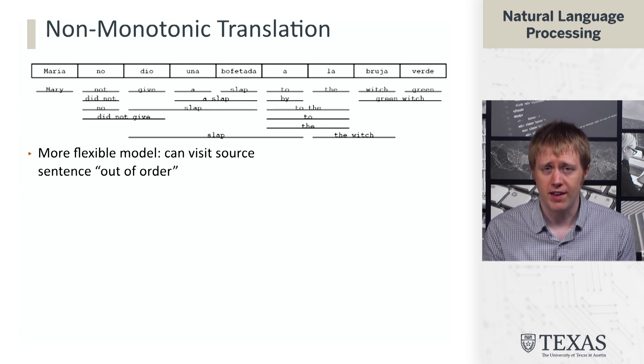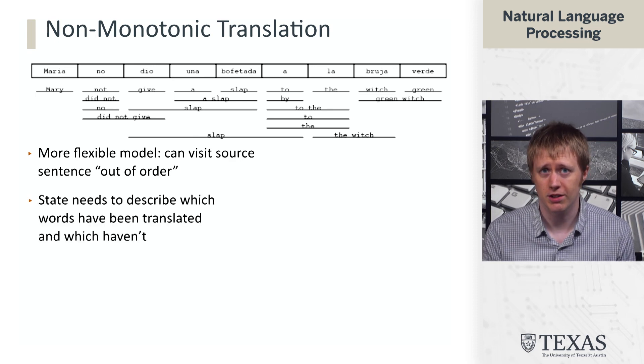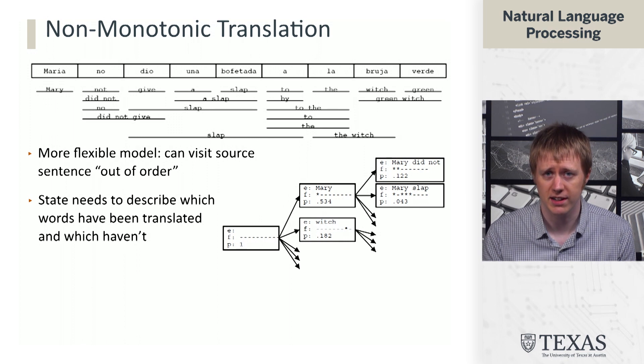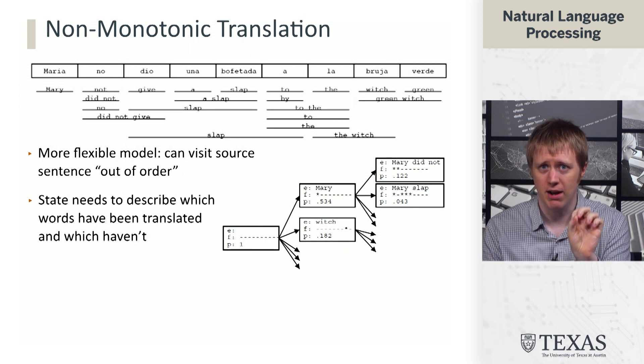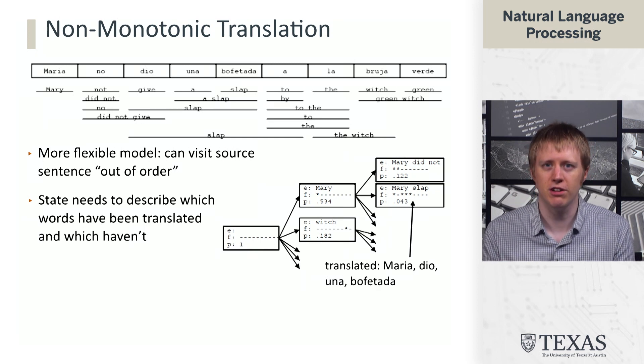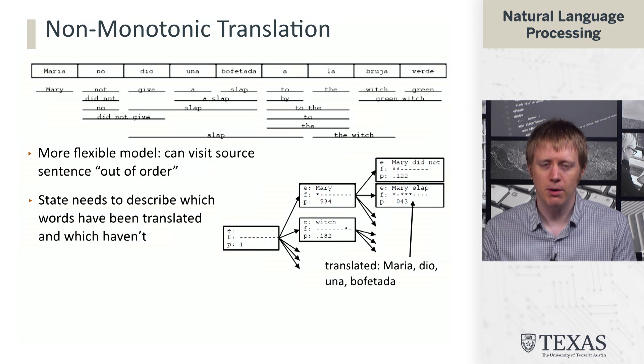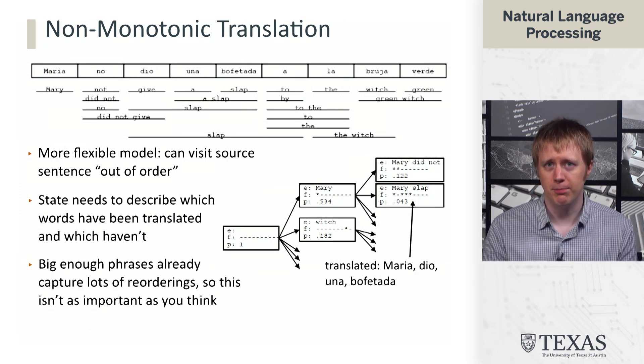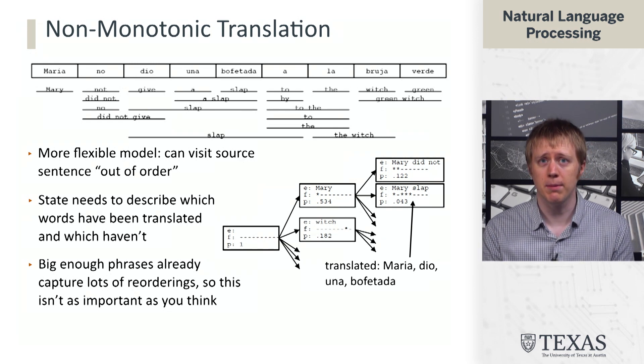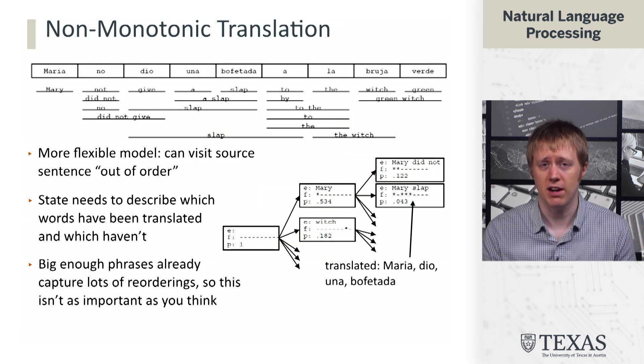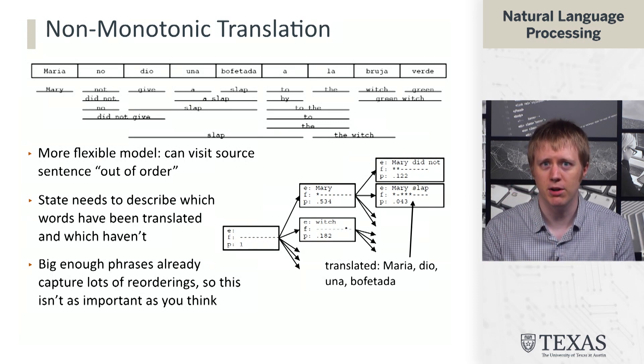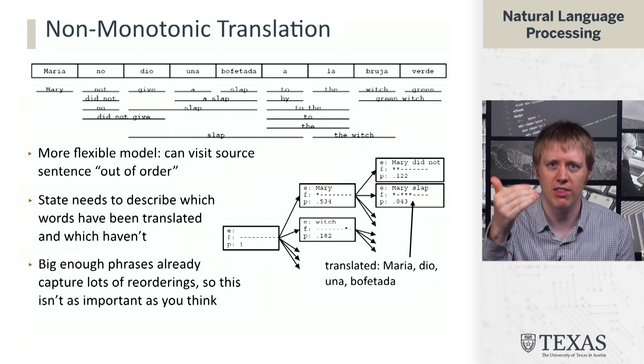There are also models that visit words out of order. These are significantly more complicated and so we're not going to talk about them very much. The state in this case also needs to track additional information about what words you have and haven't translated, so that you can kind of go back and pick up the words that you haven't translated so far. And so you get this extra kind of bit vector thing in the state and generally this is very involved to deal with. And in most cases it's not actually necessary because if you have a big enough model that has seen a lot of phrases, those big phrases actually already capture big reorderings. So even though reordering might be very important to get things like la bruja verde translating into the green witch, in this case we actually have a phrase green witch which tells us that reordering and so we can get that reordering even operating within the monotonic translation framework.